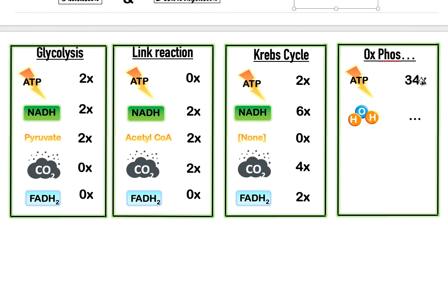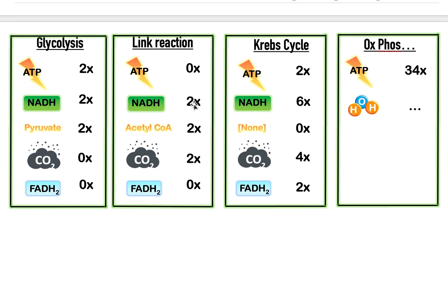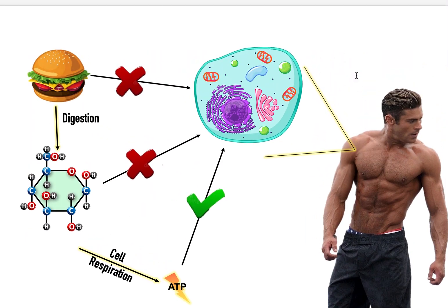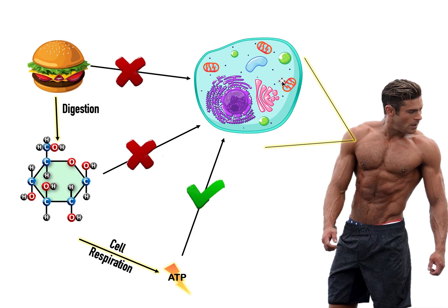So we managed to create 34 ATPs. We had 10 NADHs — 10 times 3 gives us 30 ATPs. We also had 2 FADH2s — 2 times 2 gives us 4 ATPs. Adding 30 and 4 gives us 34 ATPs. That's why we managed to create so much ATP. Now our cells have plenty of ATP to drive all the processes they need to survive — that's why we're hungry, why we eat, so that food becomes glucose and glucose gives us ATP.